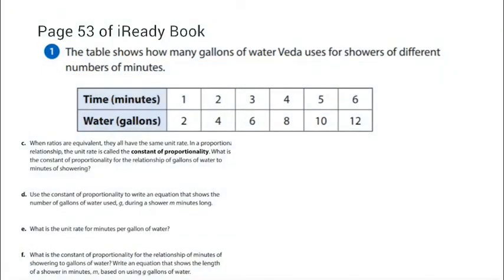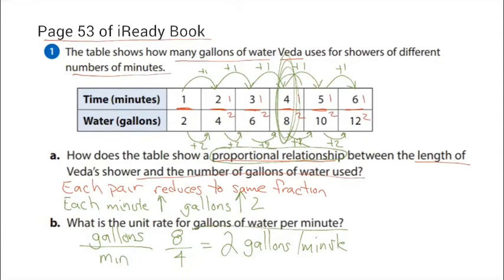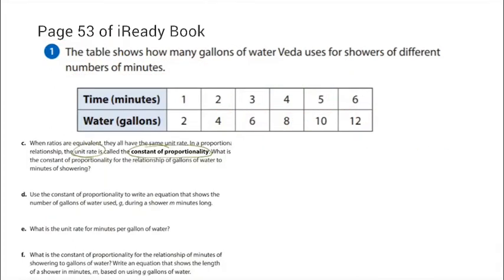Part C: when ratios are equivalent, they all have the same unit rate. In a proportional relationship, the unit rate is called the constant of proportionality. What is the constant of proportionality for gallons to minutes? Well, in Part B we calculated the unit rate was two gallons per minute, so the constant of proportionality is also two gallons per minute.